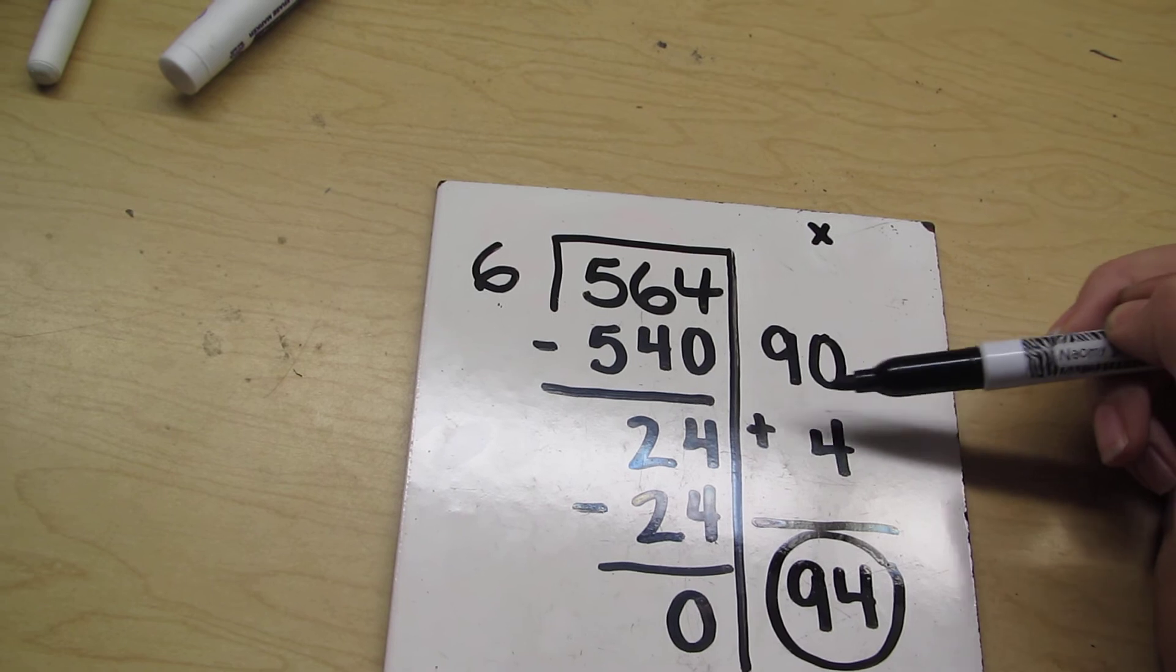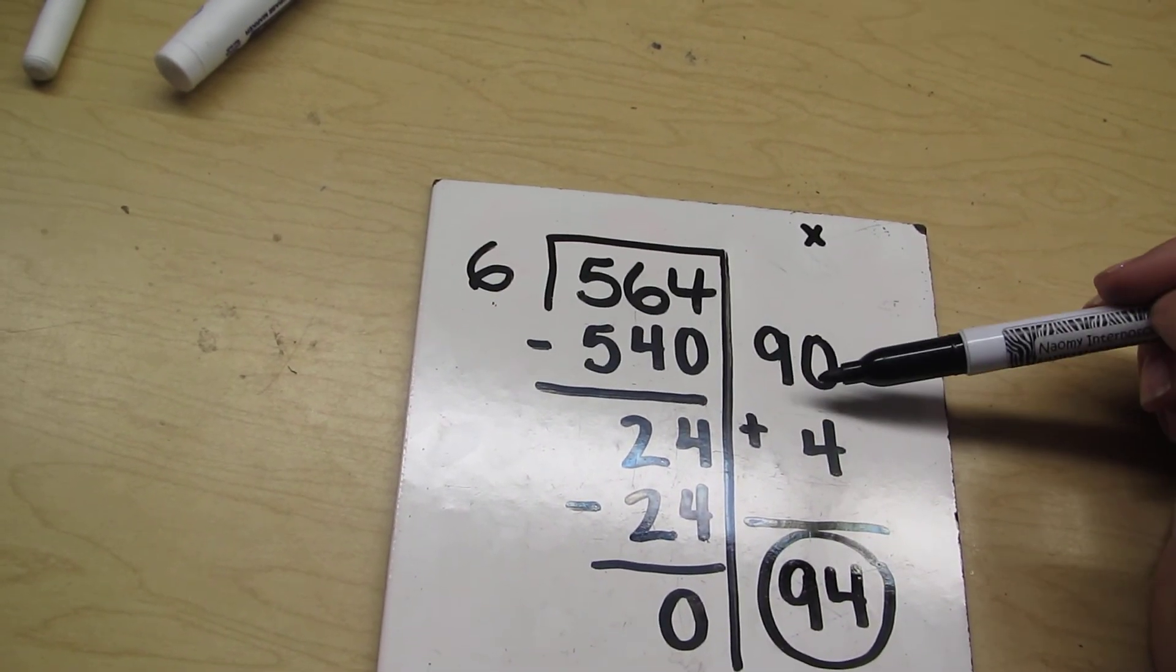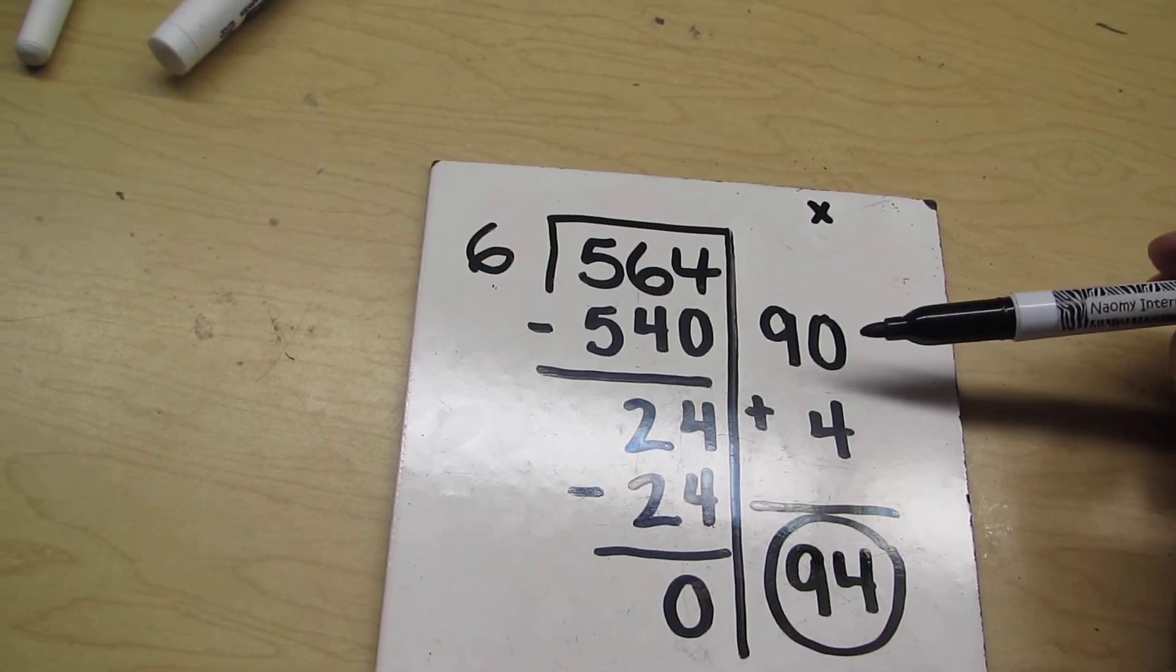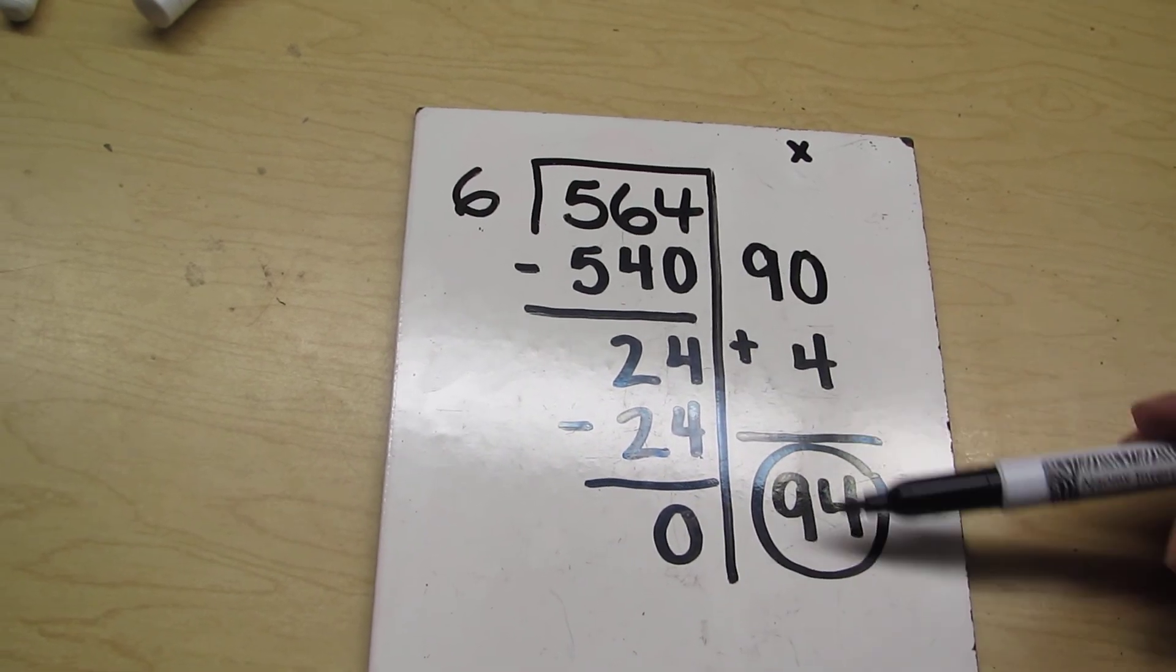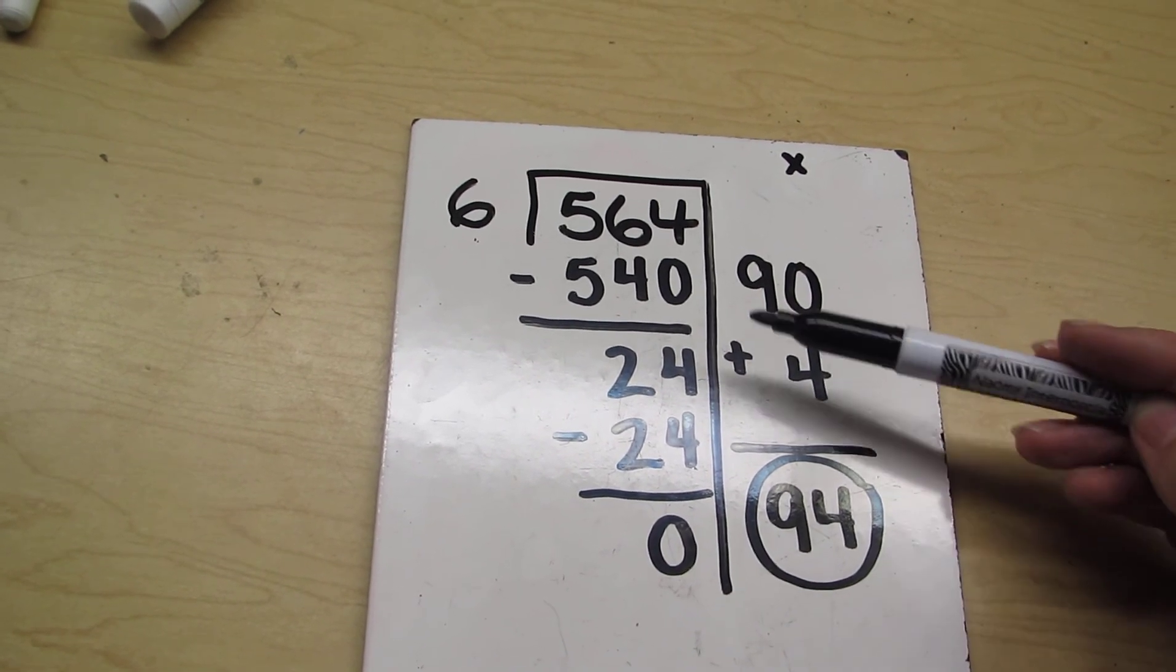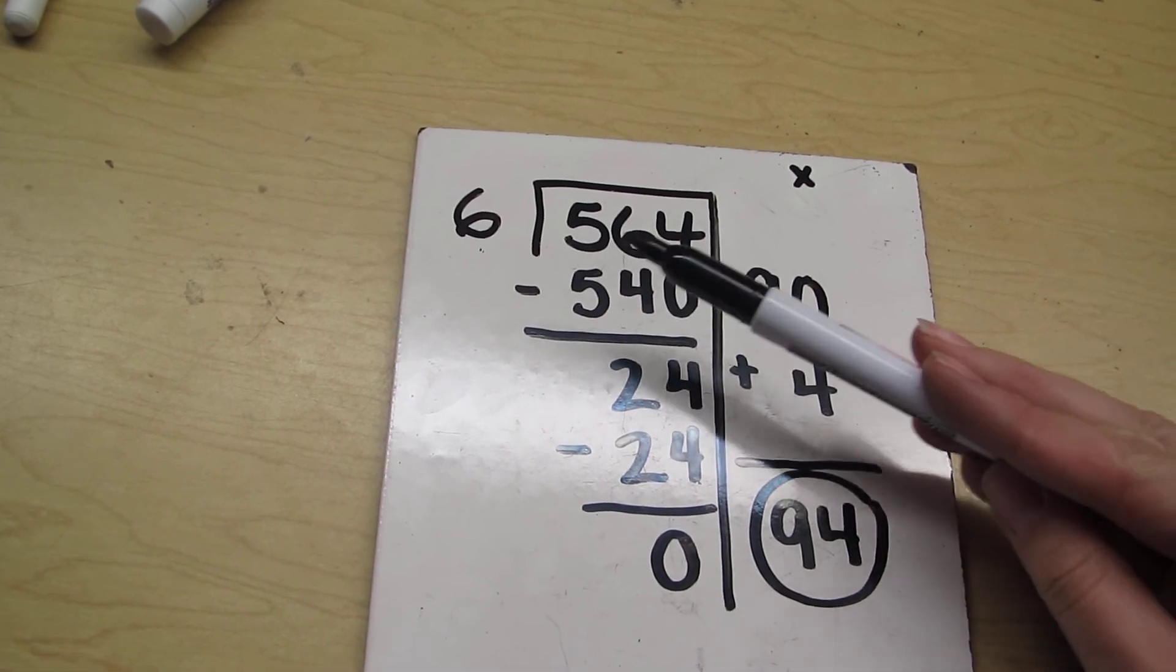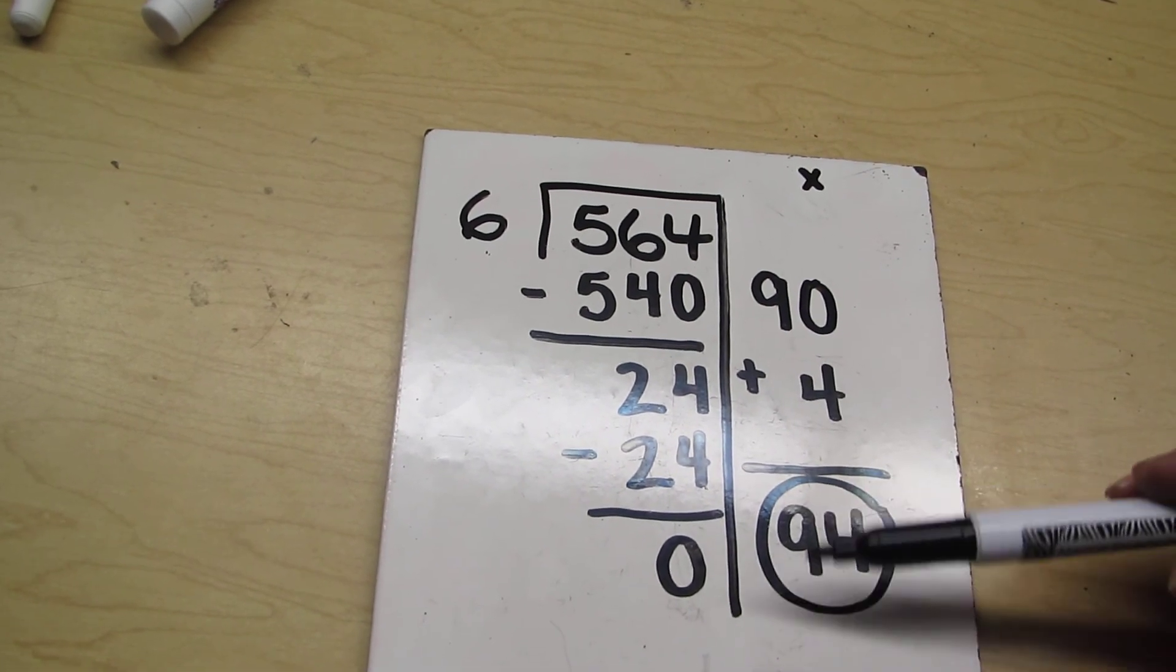Now remember, you don't necessarily have to get it perfect. For example, if you make a mistake and you say, okay, 6 times 80 instead, that's okay. Because you missed one, it doesn't matter. Your steps will be longer, but you'll still end up getting to 94 no matter how many steps you have. That's why you have to try and get as close as possible to make sure you don't do too many steps, but if you happen to miss one, it's okay.